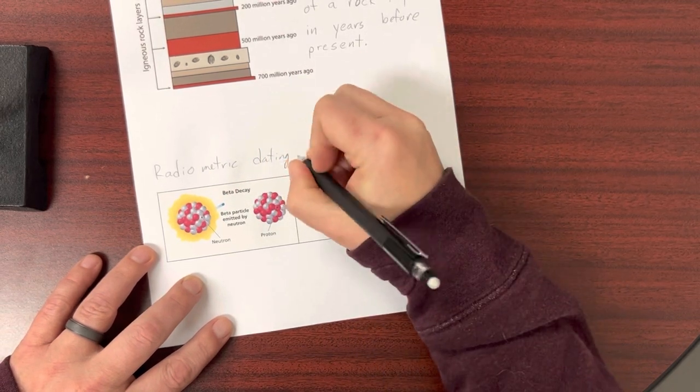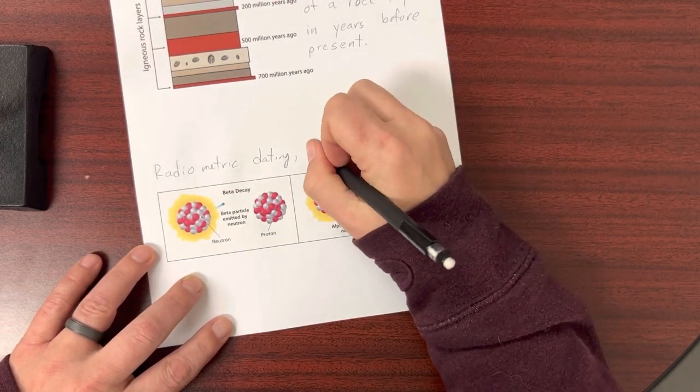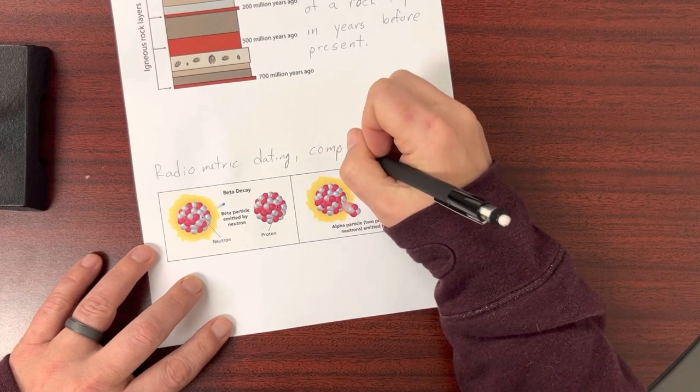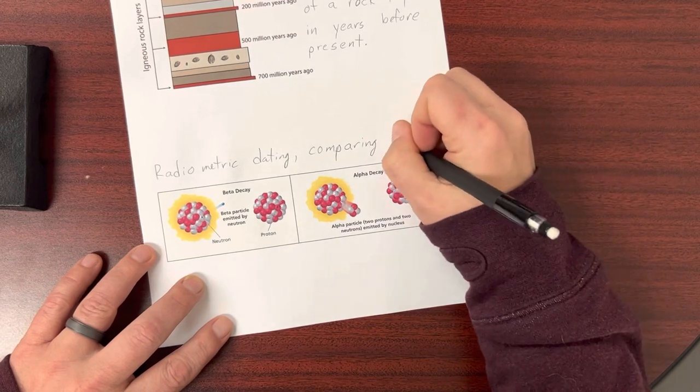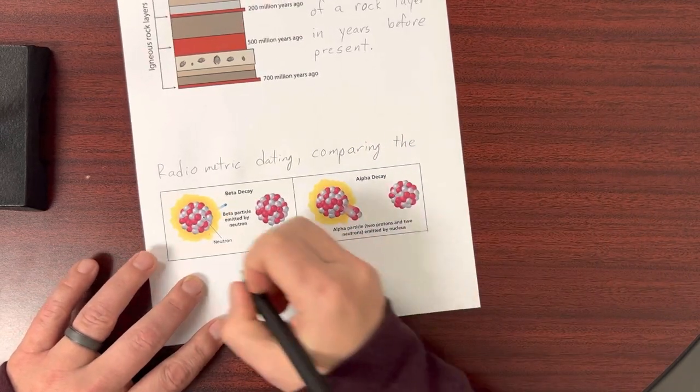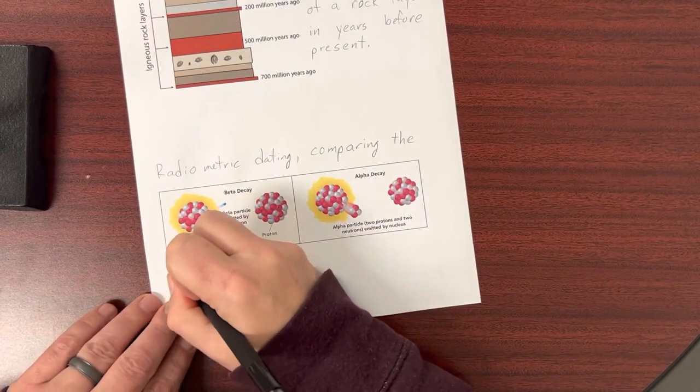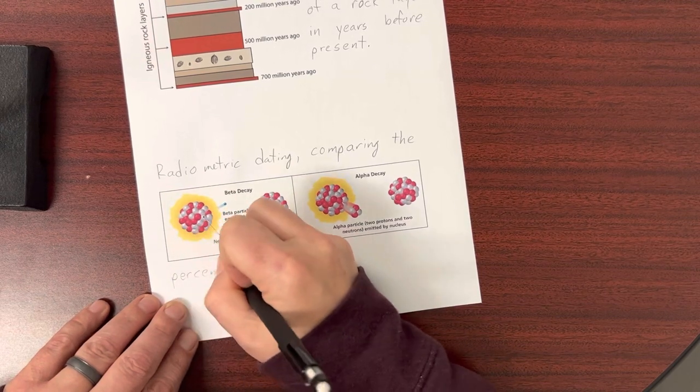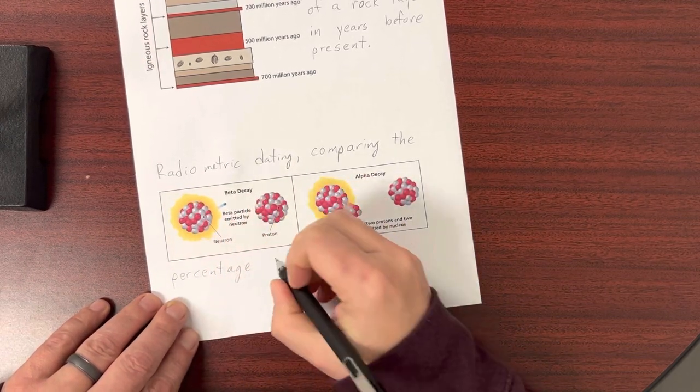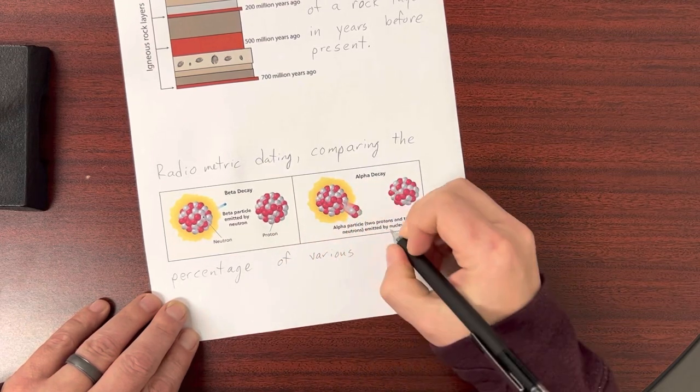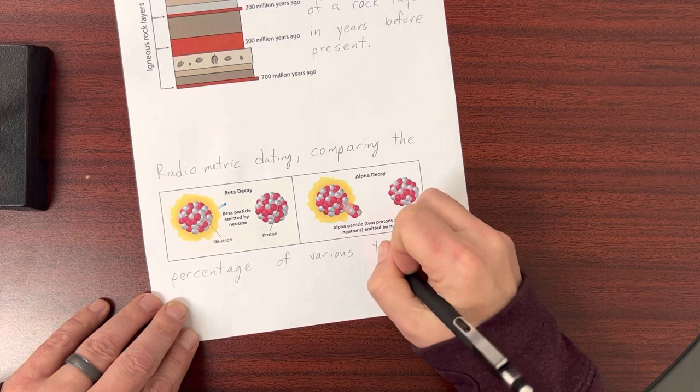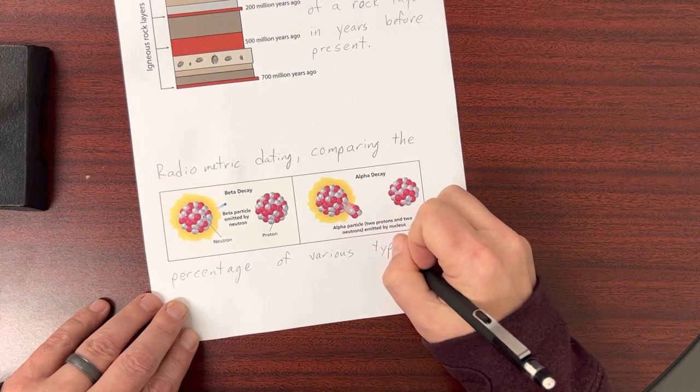And we'll get into more of this later on in chemistry, but the idea here is that you can compare—we're at the point where we can look at atoms, and we compare certain percentages of various types of atoms, because they change slowly over time.